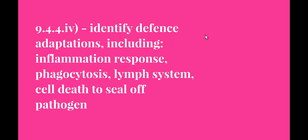Welcome to the next video in the search for better health topic. This video looks at syllabus dot point 9.4.4 for identified defense adaptations, including the inflammation response, phagocytosis, the lymph system, and cell death to seal off pathogens. As an identified dot point, we just need to know what happens in each of these four processes and why they take place.